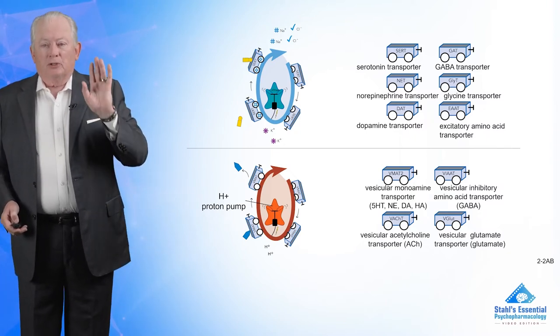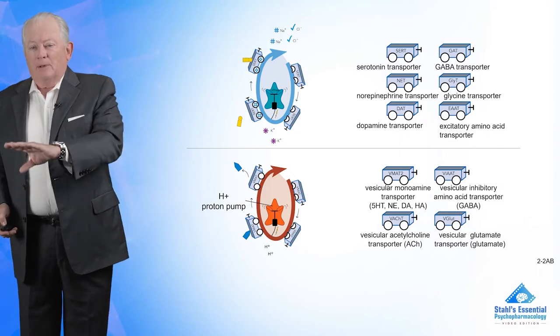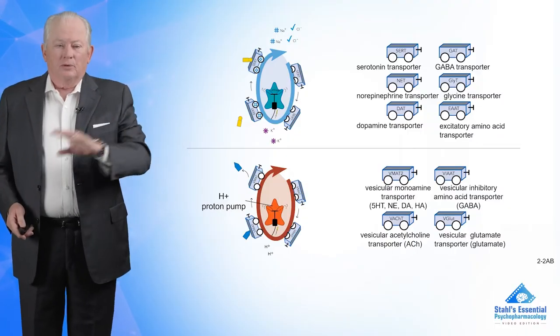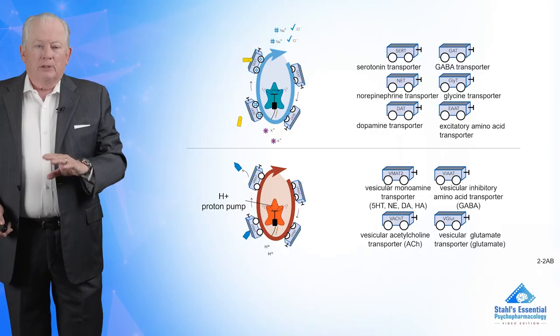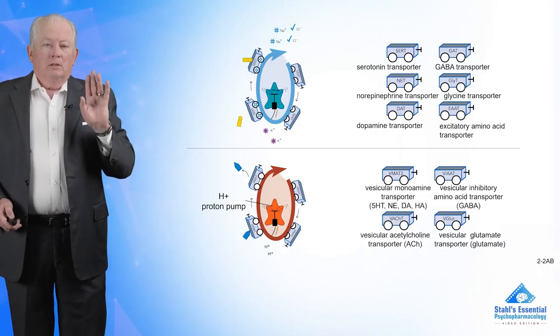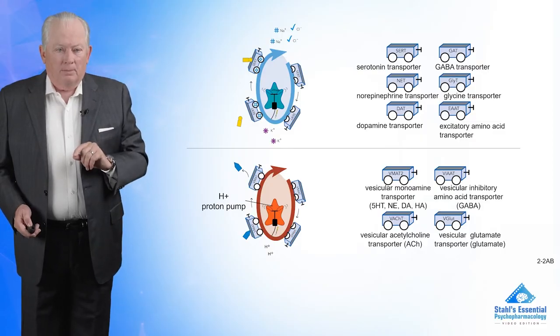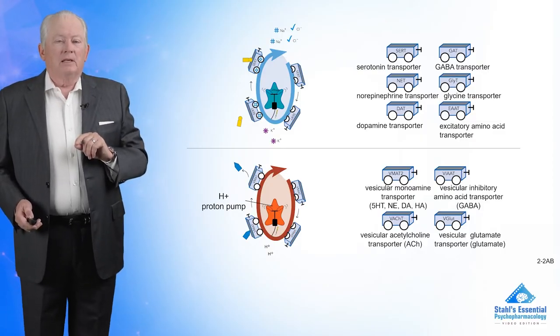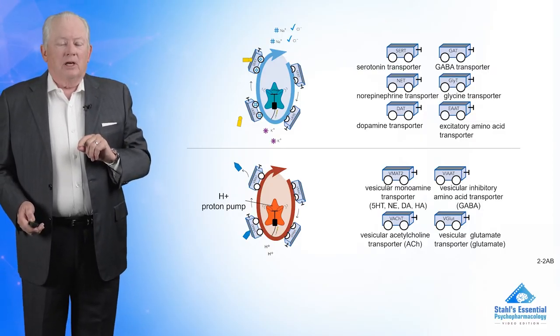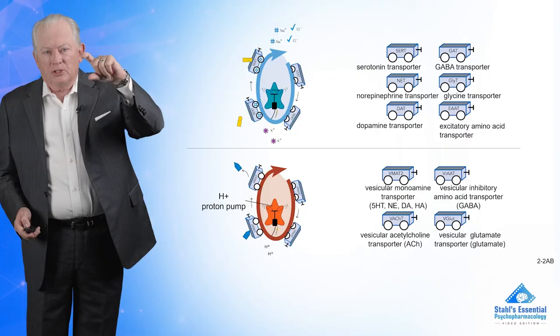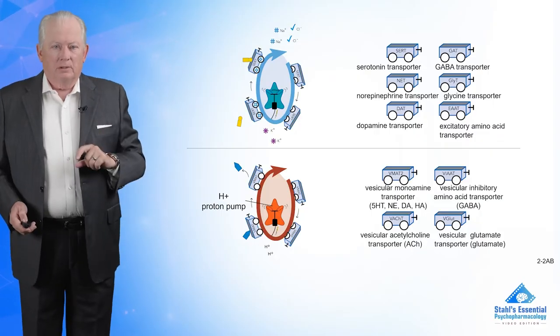There's a vesicular transporter for GABA, another one for acetylcholine, and another one for glutamate — but they all exchange with proton pumps inside the cell on the membrane of the synaptic vesicle.